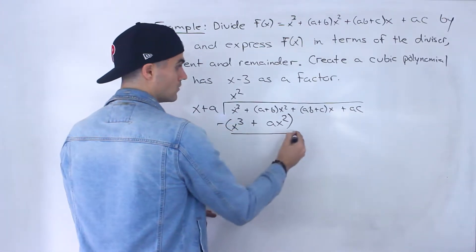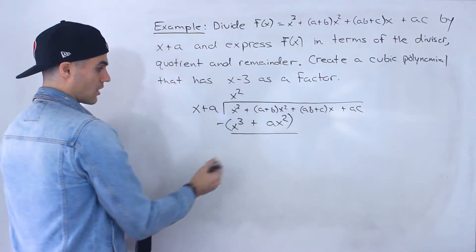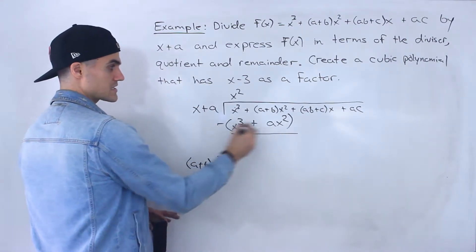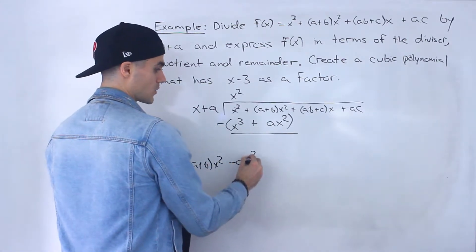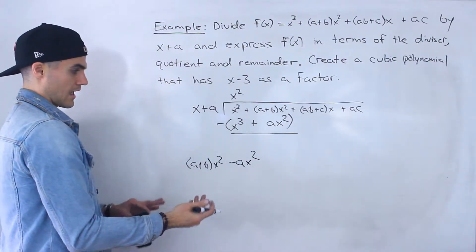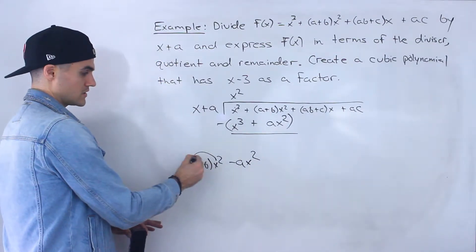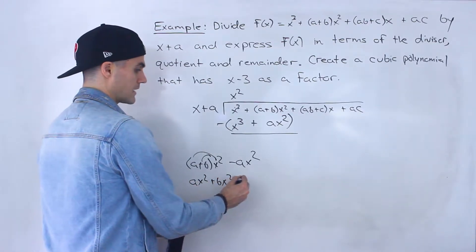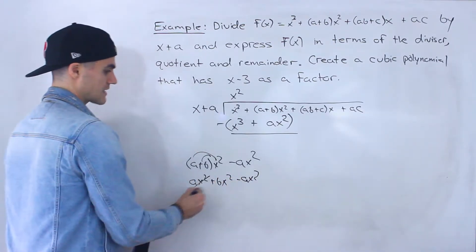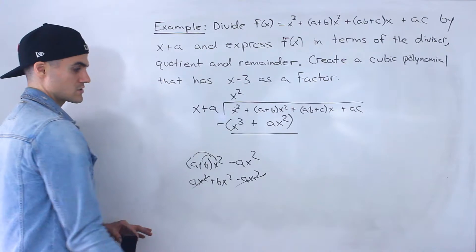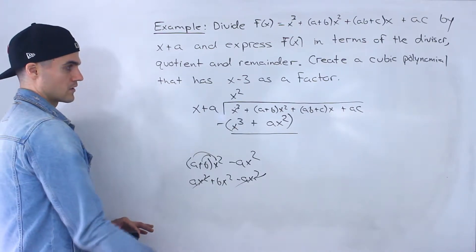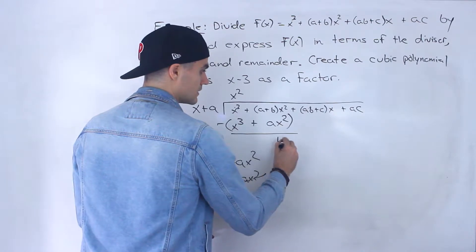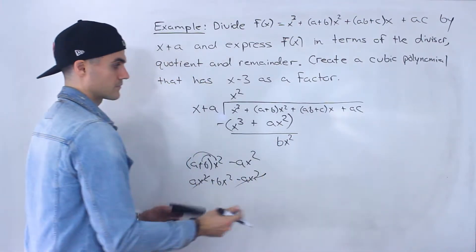We're going to subtract this whole expression. x to the 3 minus x to the 3 is just 0. Now, on the side here: (a plus b)x squared minus ax squared. If we distribute, we have ax squared plus bx squared minus ax squared. Notice that the ax squareds cancel out, so when we subtract we're just left with bx squared.